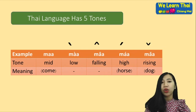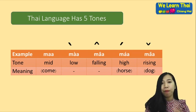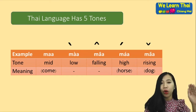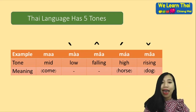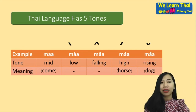Next one: falling tone — we have a tone mark that goes up and then down. For example, 'mâa' — this means 'a dog'. Next one: high tone — the sound is going up, like 'máa' — this means 'horse'. And the last one: rising tone — the sound goes down and then up, like 'mǎa' — this means 'a dog' as well.